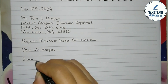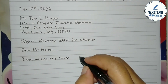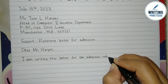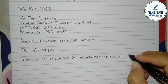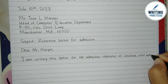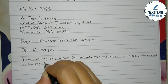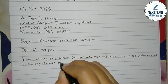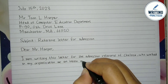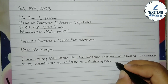In the first paragraph, it is about the introduction. Write for whom you are writing the reference letter — in this case, for Chelsea. Then introduce who Chelsea is. You can mention her current job and also her educational background that is in line with the job.